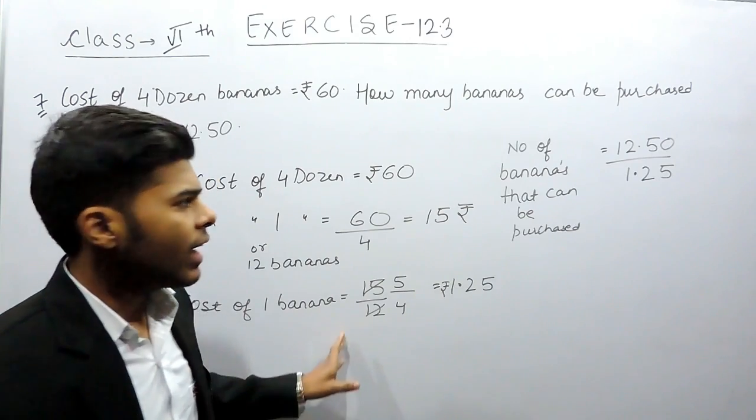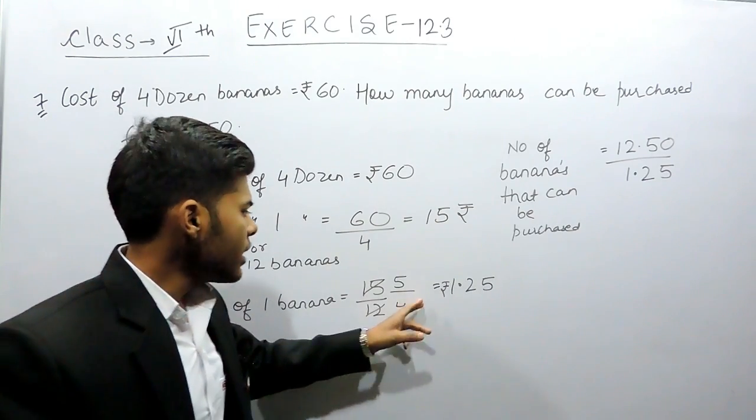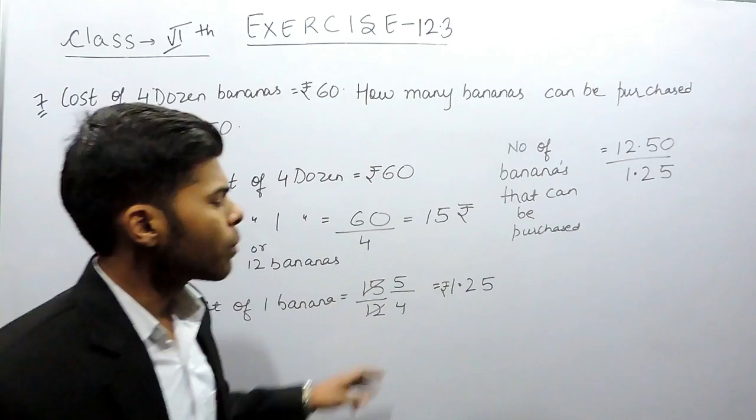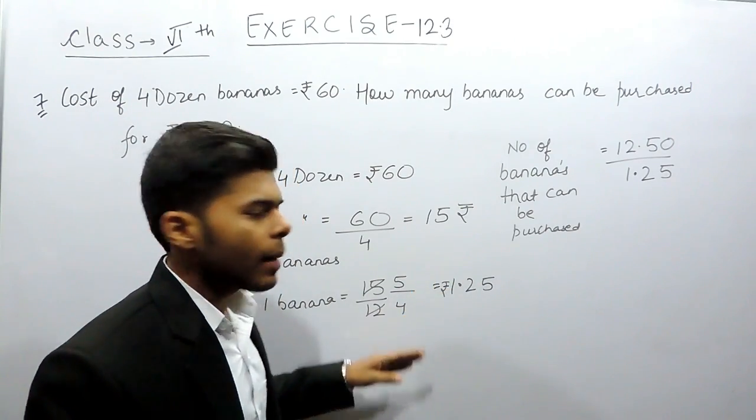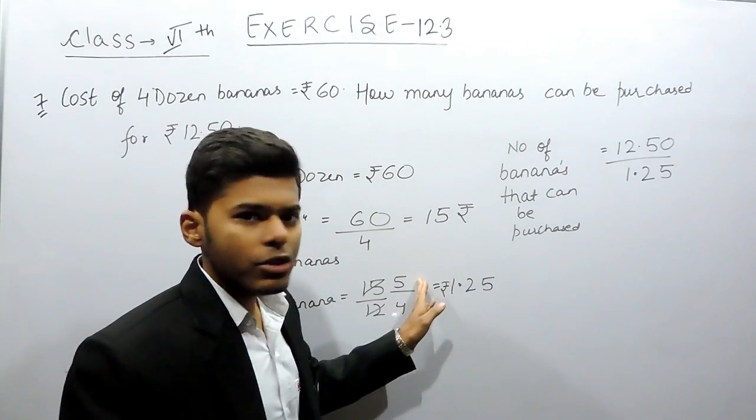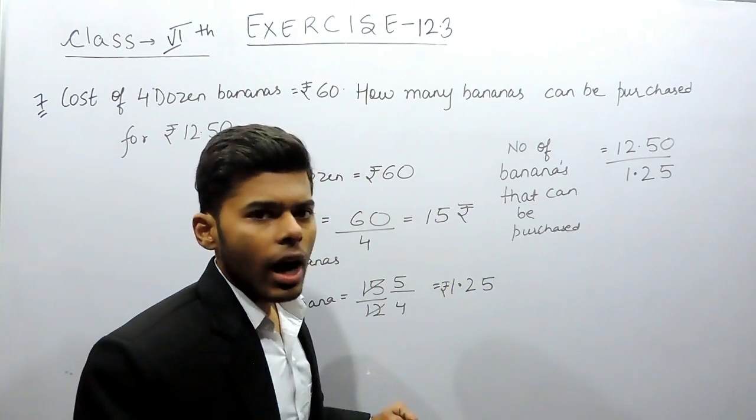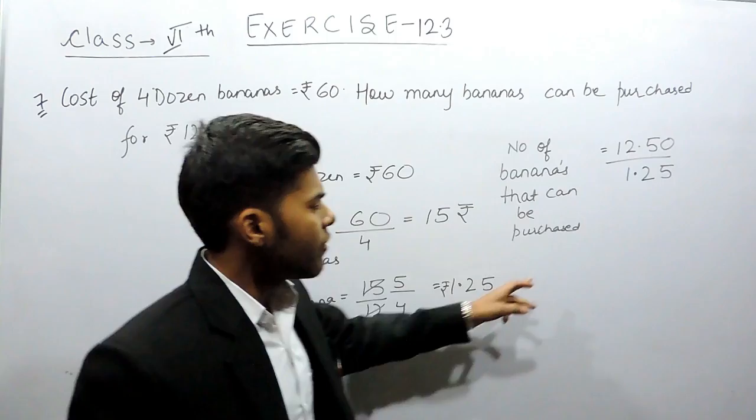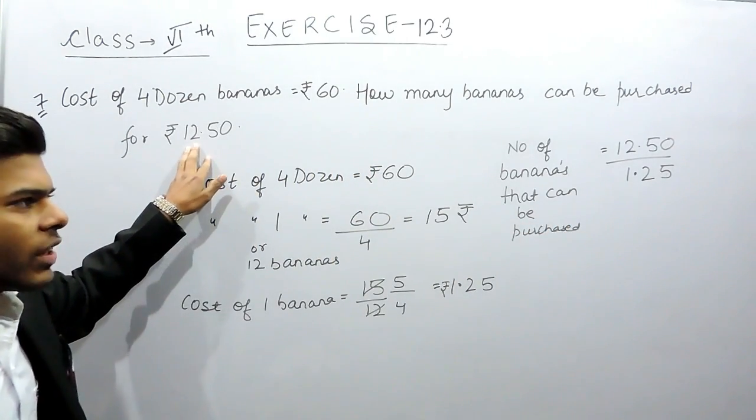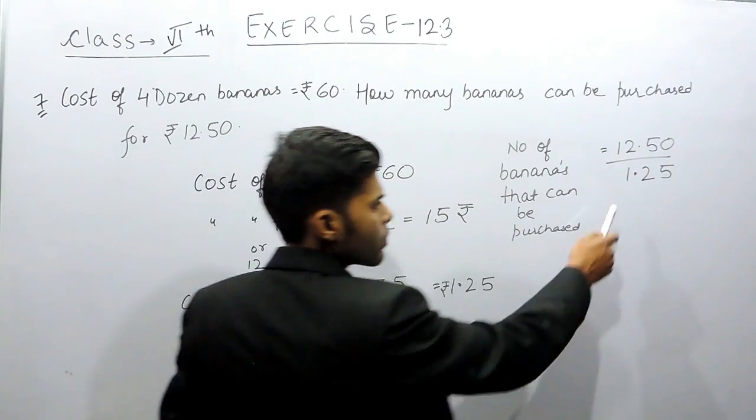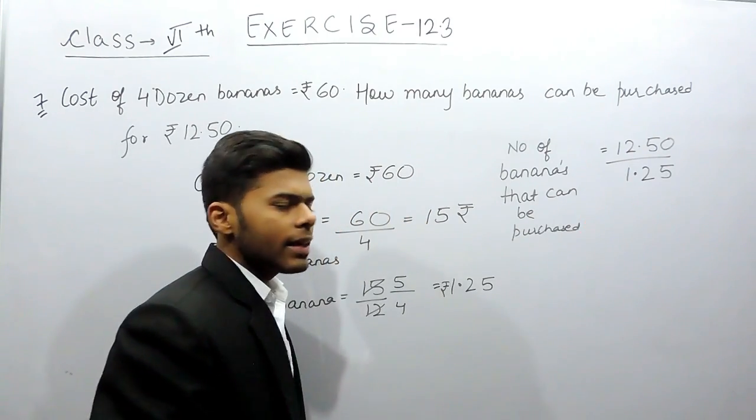This is the cost of one banana. For example, suppose if you are having 100 rupees and one chocolate costs 10 rupees, then what we will do is divide 100 by 10 in order to get the number of chocolates that you can purchase. Similarly, we also did the same thing: we have total of 12.50 rupees, one banana costs 1.25, so we divided them.